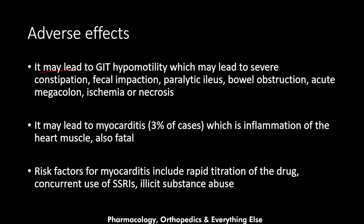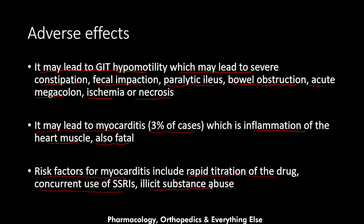GI hypomotility may lead to severe constipation, fecal impaction, paralytic ileus, bowel obstruction, acute megacolon, and ischemia or necrosis of the bowel. Clozapine may also lead to myocarditis in 3% of cases, which is inflammation of the heart muscle and can be fatal. Risk factors for myocarditis include rapid titration of the medication, concurrent use of selective serotonin reuptake inhibitors, and illicit substance abuse.